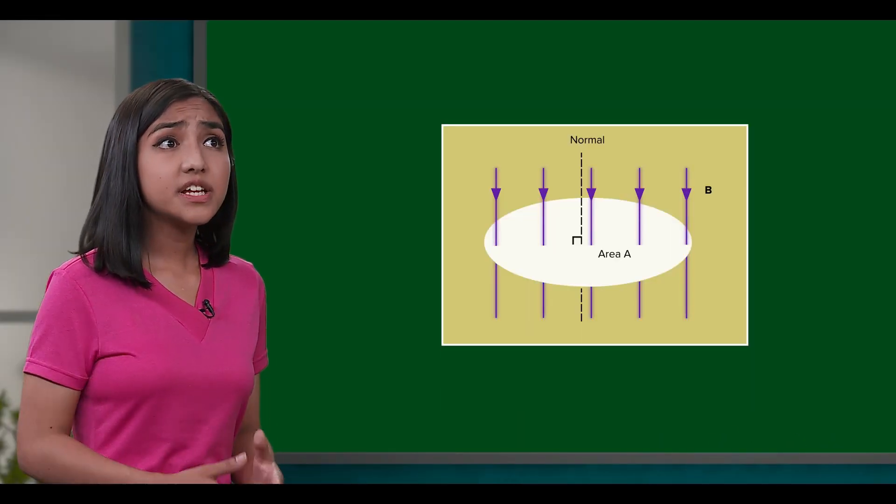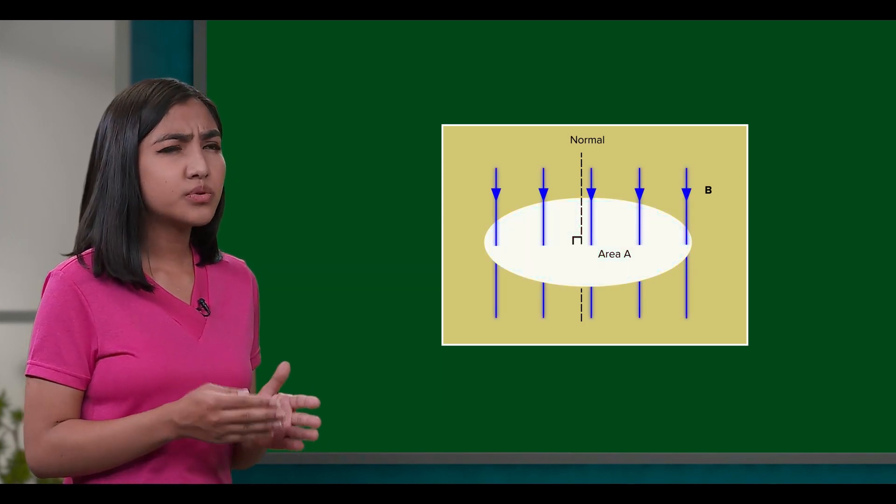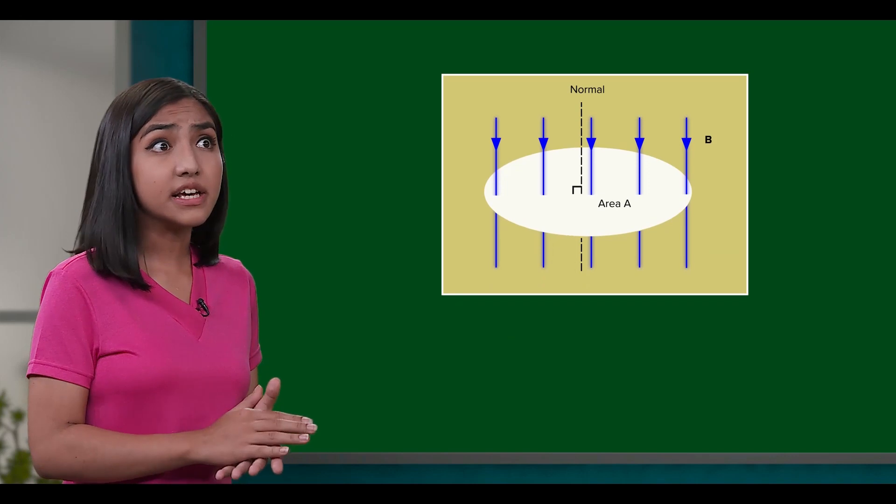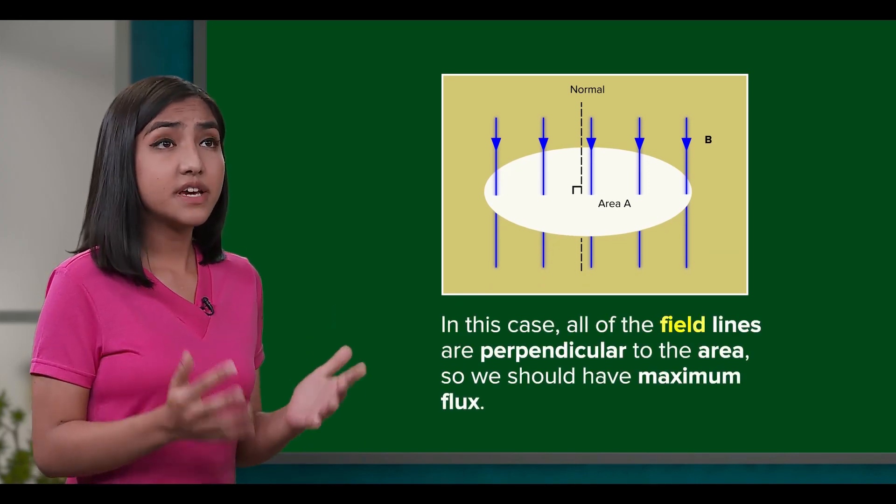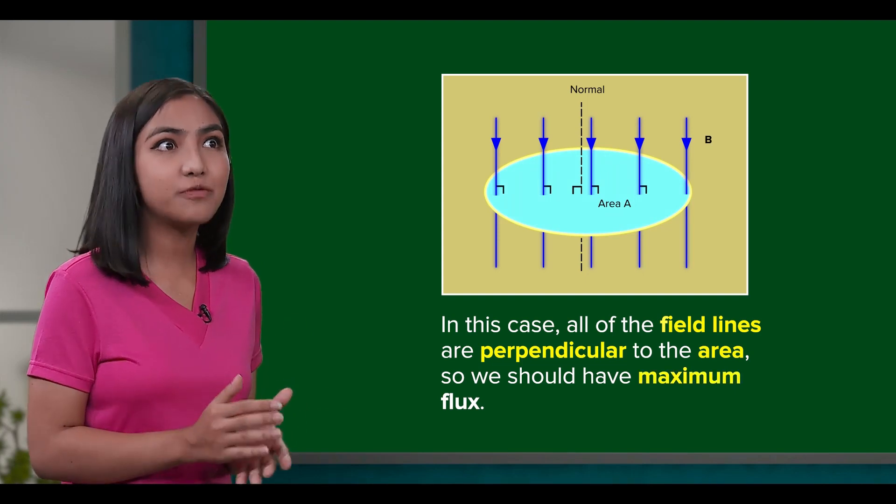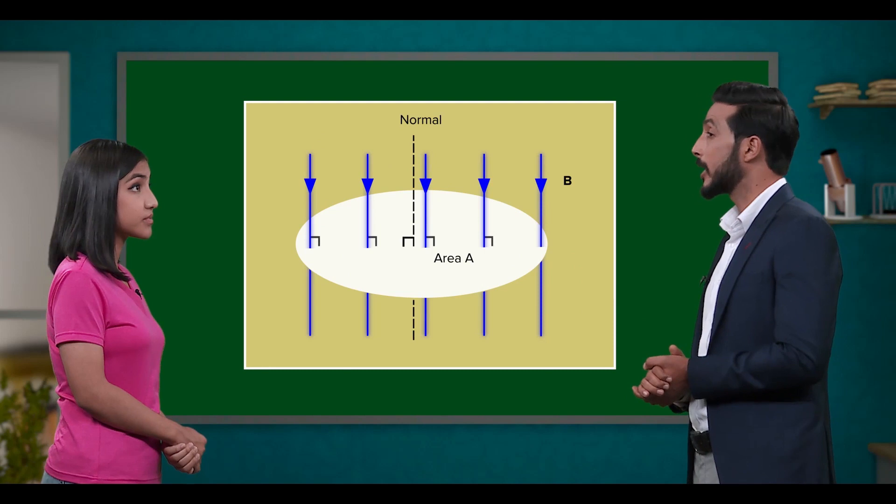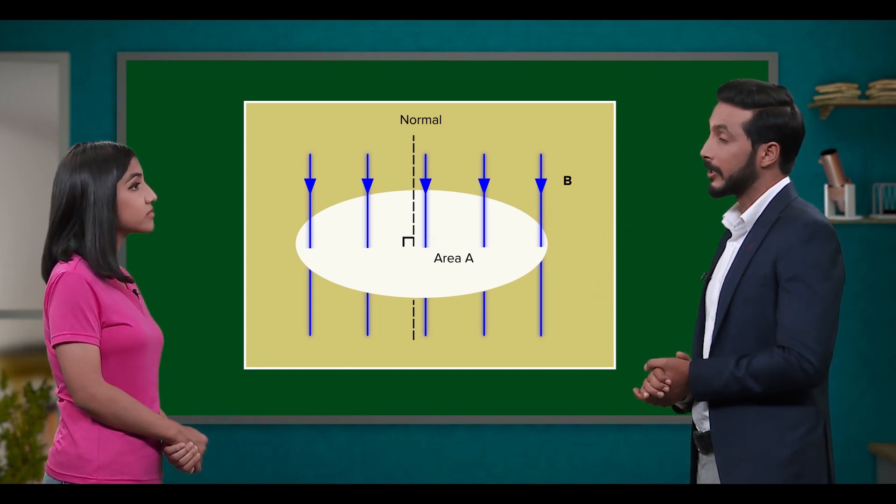Oh, so you mean that if the field lines were at an angle to the area, then they would contribute less to the flux? But clearly, in this case, all of the field lines are perpendicular to the area, so we should have maximum flux. Exactly. We can clearly observe this if we were to change the direction of the magnetic field.